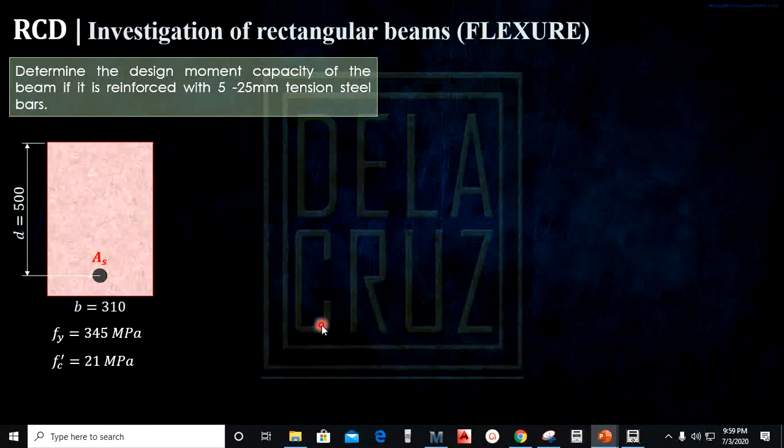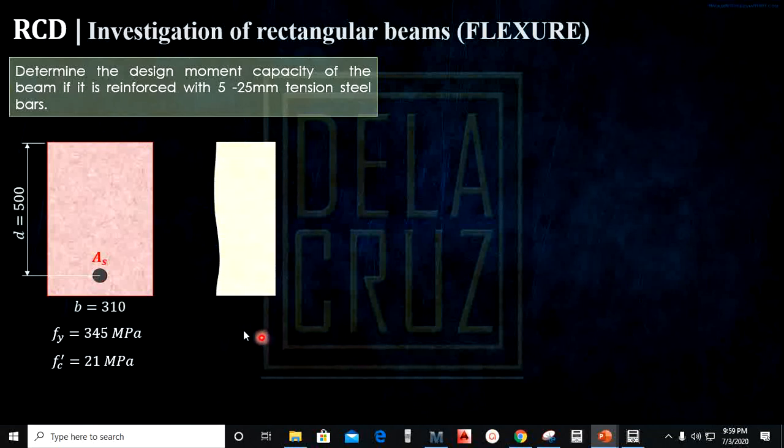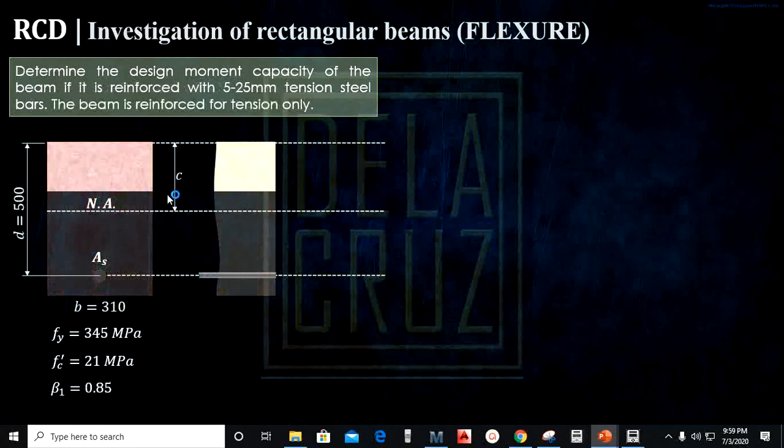The first step in concrete or beam problems is to locate the neutral axis. That is the main focus at first view. Looking at the beam at the side view at a cut portion, we will project that. Let's assume the neutral axis is here, and the neutral axis distance from the extreme compression fiber to that point is denoted as small c.